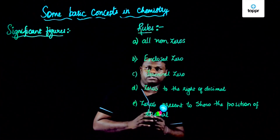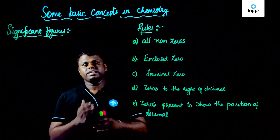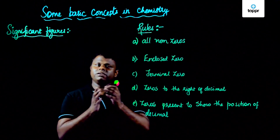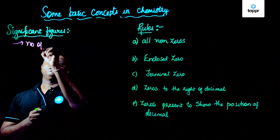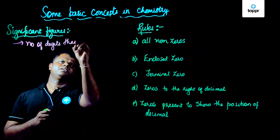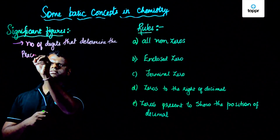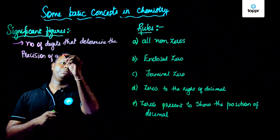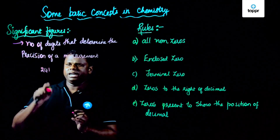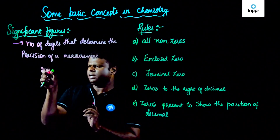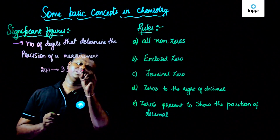Now, let's talk about significant figures. Significant figures are the figures that are actually important — they are the number of digits that determine the precision of a measurement. For example, if I have something like 2, 4, 1, that means it has three digits, so it has three significant figures. If I have 241.3, this has four significant figures.